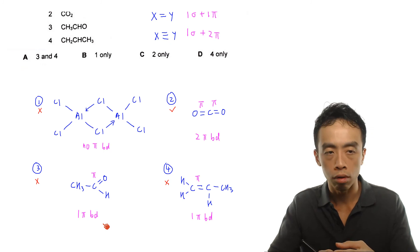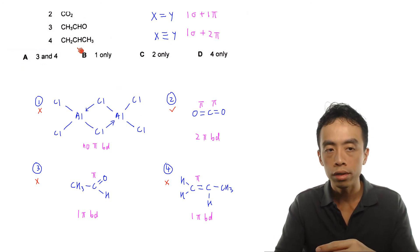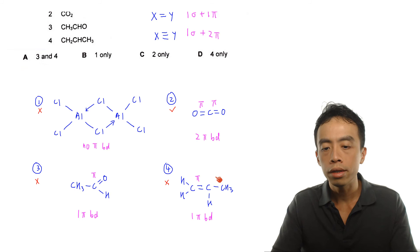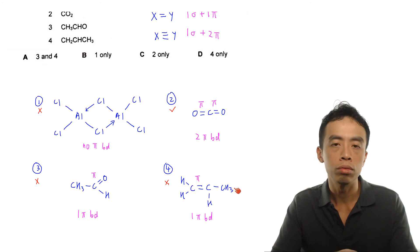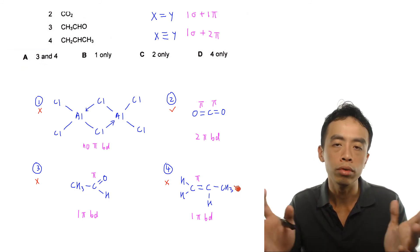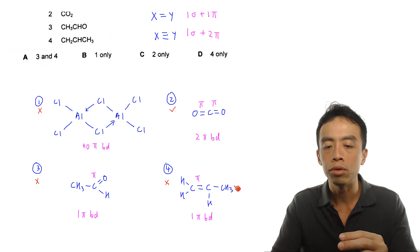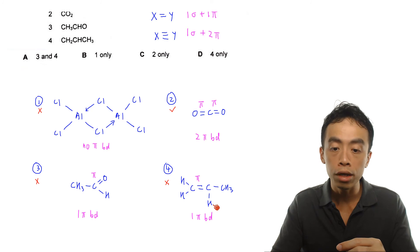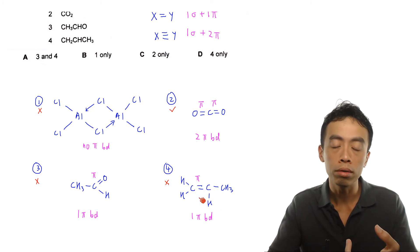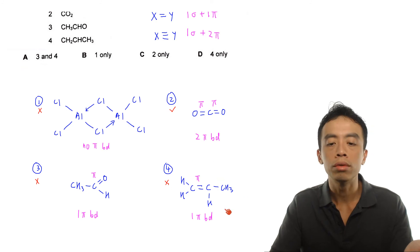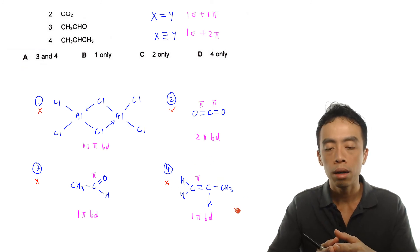Now finally if I look at option four, CH2, CH, CH3. Again this CH3 is saturated so we can just lump them together. We don't need to expand the bond. The double bond is between the first two carbon. This is a CH2 double bond to a CH. So this double bond has only one sigma bond, one pi bond. So this alkene in total will only have one pi bond.